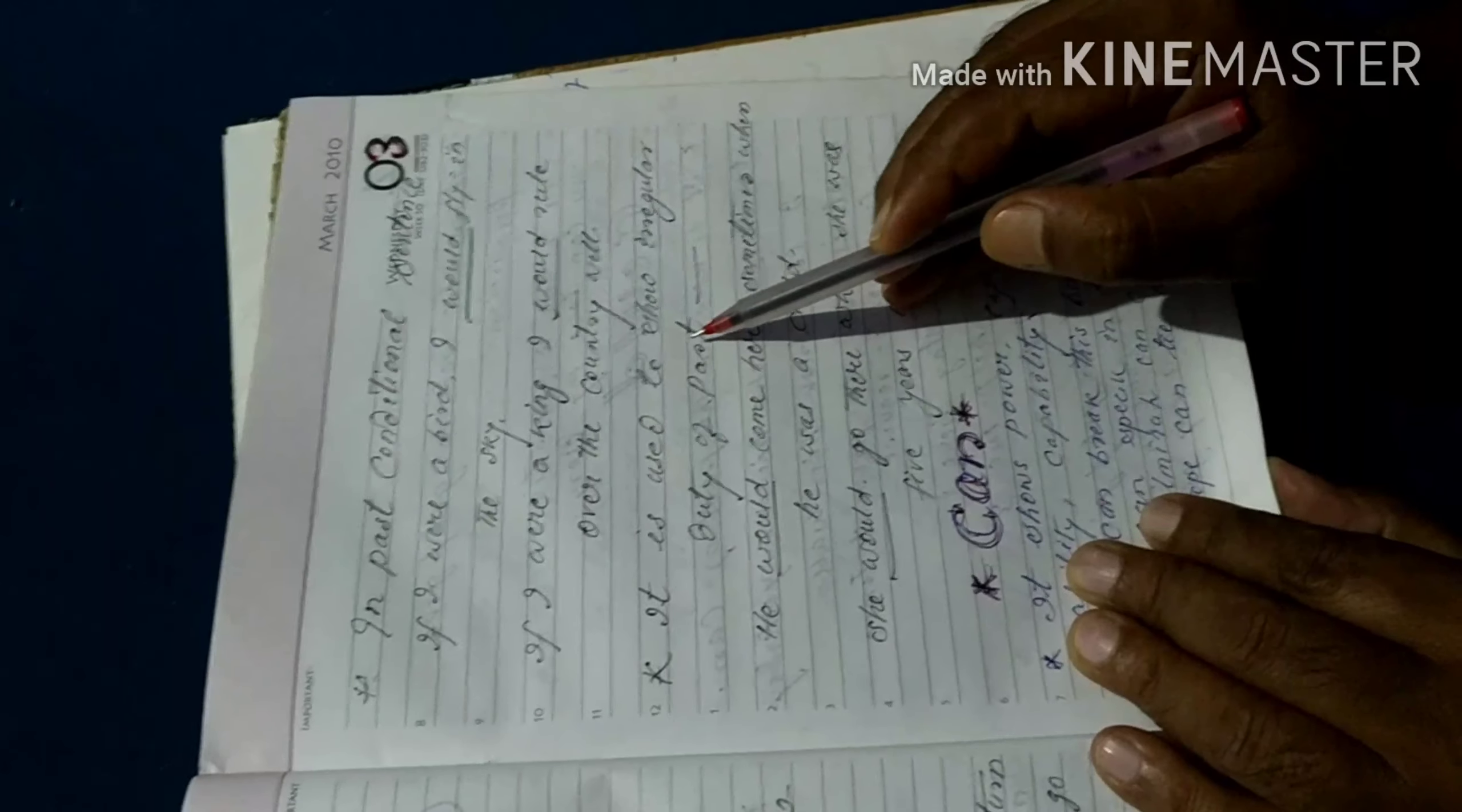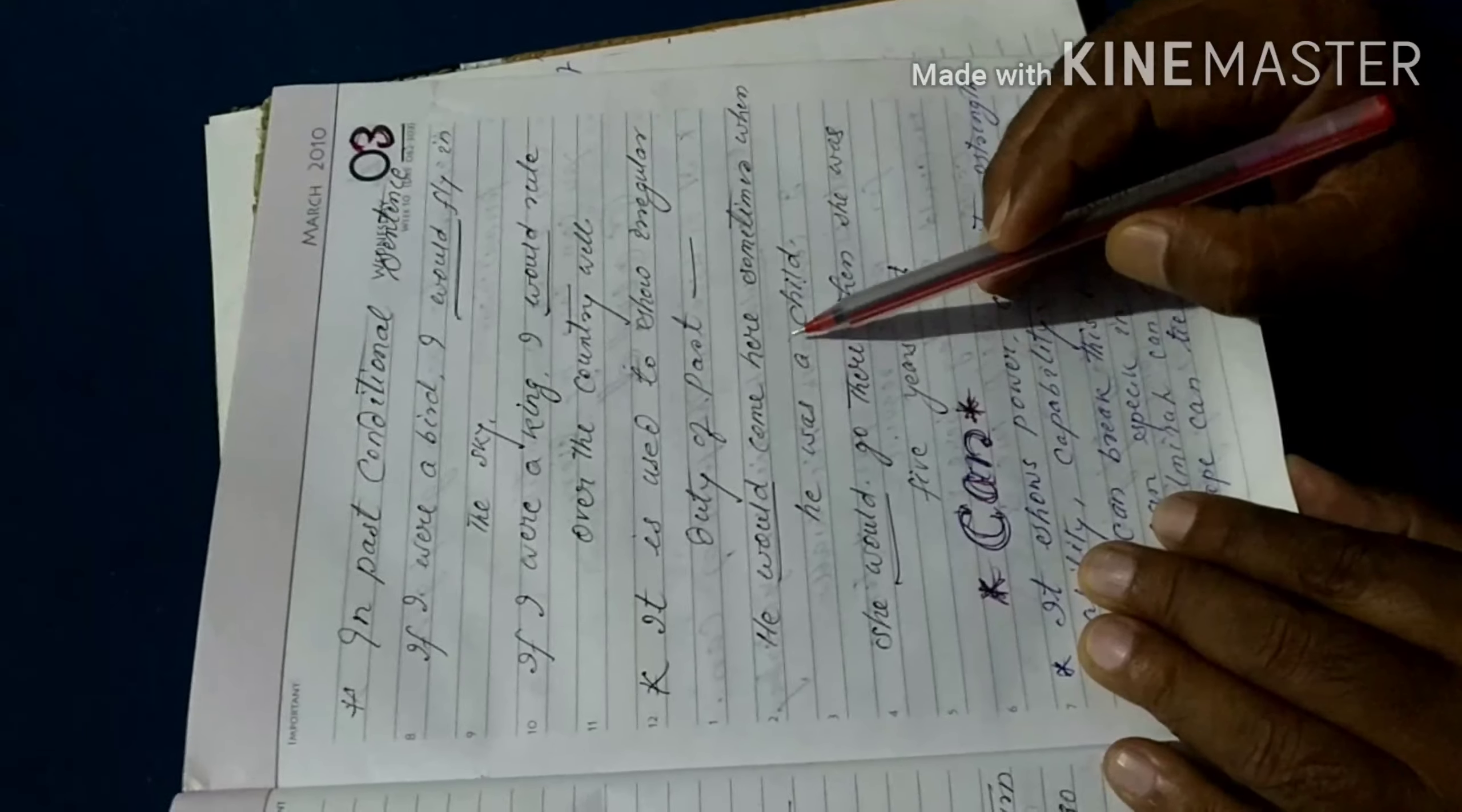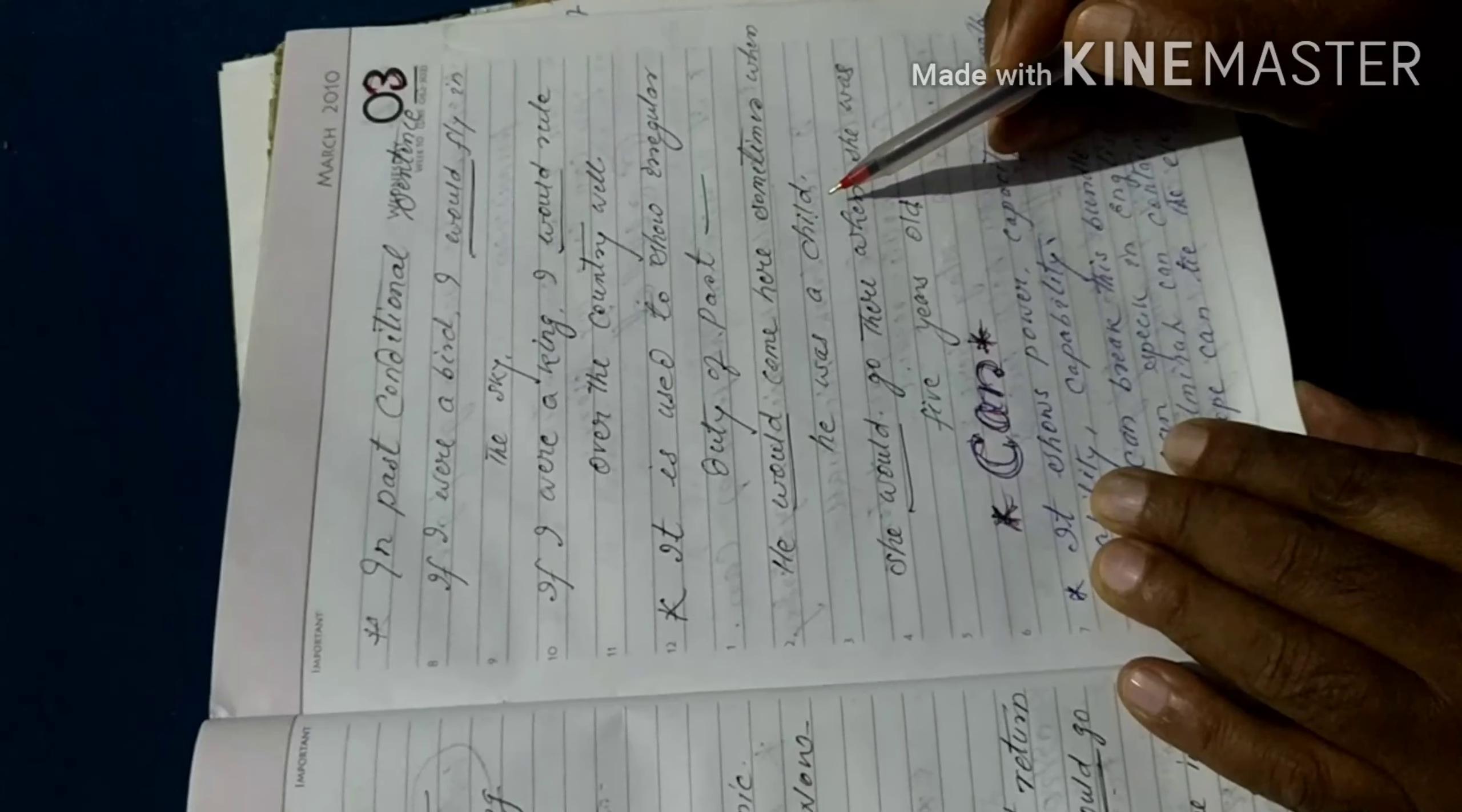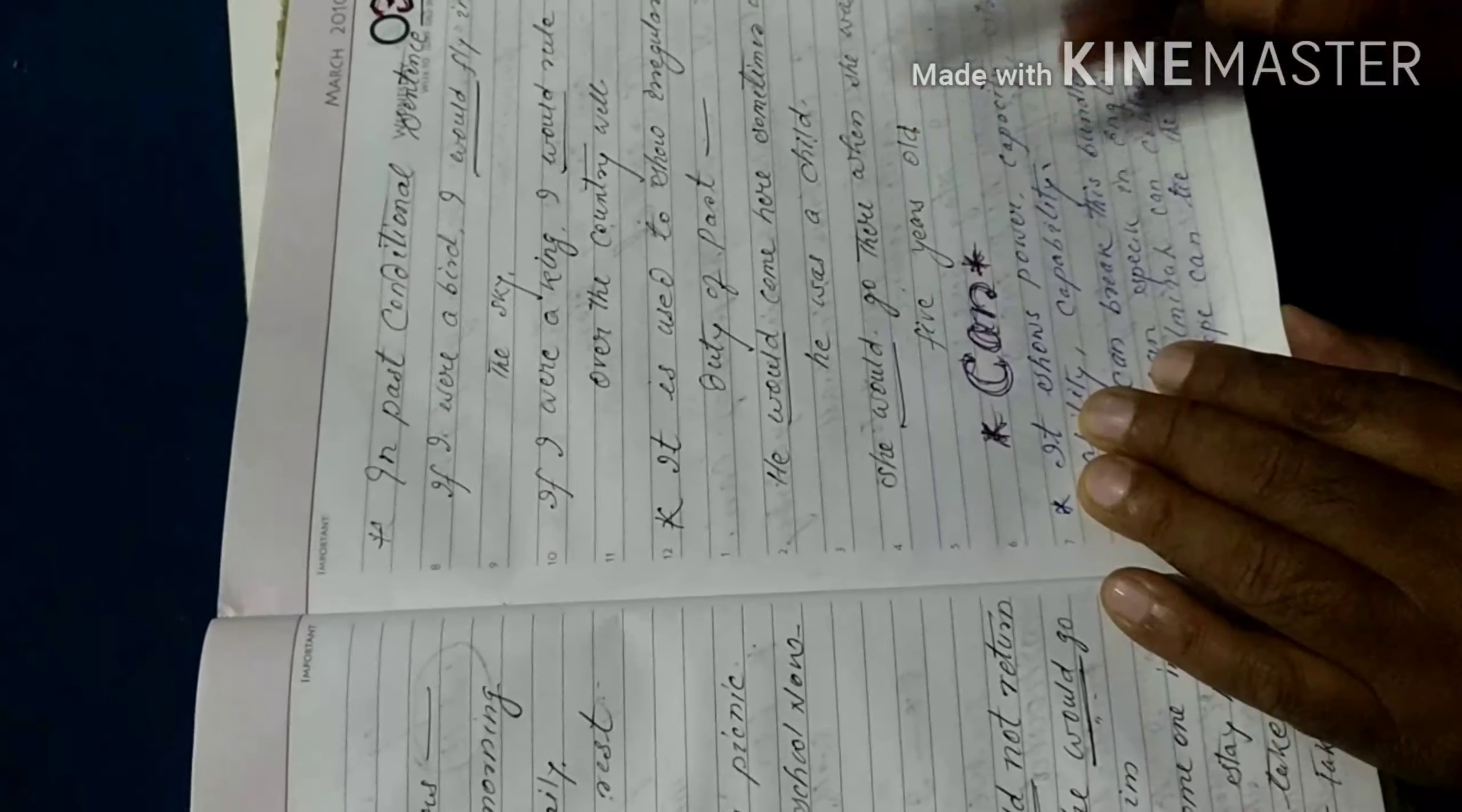Fourth use. It is used to show irregular duties of past, not regular duties. For example, he would come here sometime when he was a child. She would go there when she was five years ago. Both the sentences show the irregular duties.